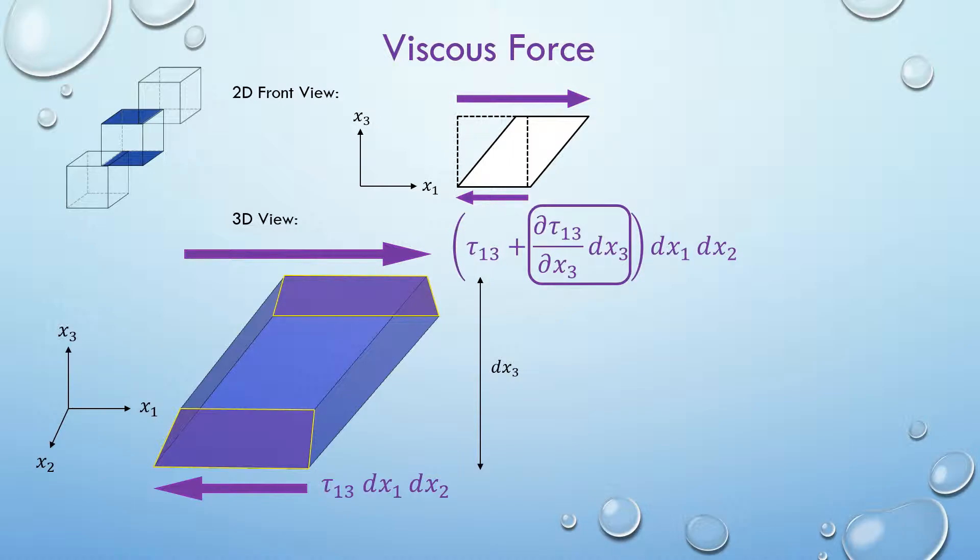Stress acts on an area, so times by dx1 and dx2. Take the difference between the top face and the bottom face, you will see that τ13 cancels out. What you are left with is the change of stress along dx3 and times by the area. We then get the net viscous force that acts on the top and bottom faces, and the bit at the end is simplified as the volume of the cube. Note something important. The viscous force depends not on the shear stress τ, but on the change or gradient of the shear stress, Δτ in Δx.